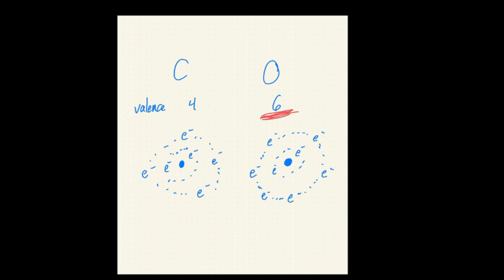That's what number six is saying — hey, that makes sense, right? But then it throws in immediately: no, that's wrong. And the reason it's wrong is this thing called Z-effective.